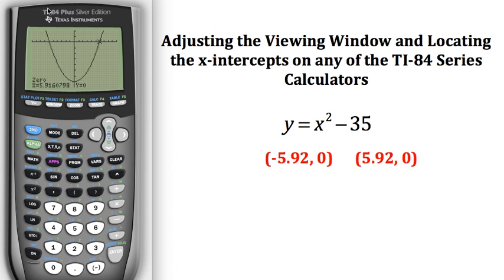So just a couple things on how to adjust your viewing window using your table of values and then finding your x-intercepts and writing them as ordered pairs.